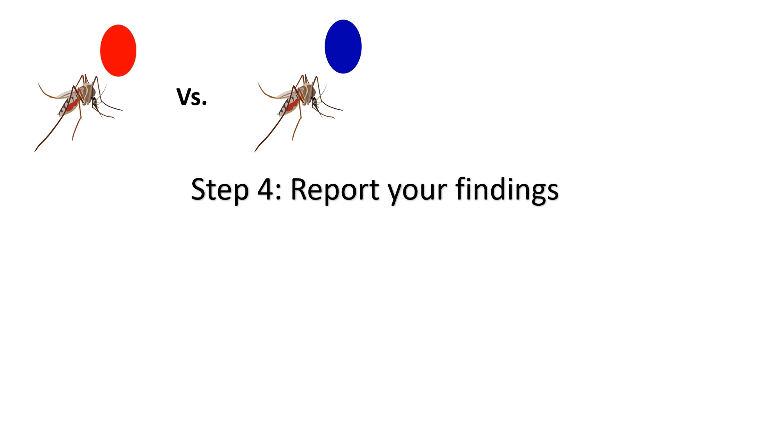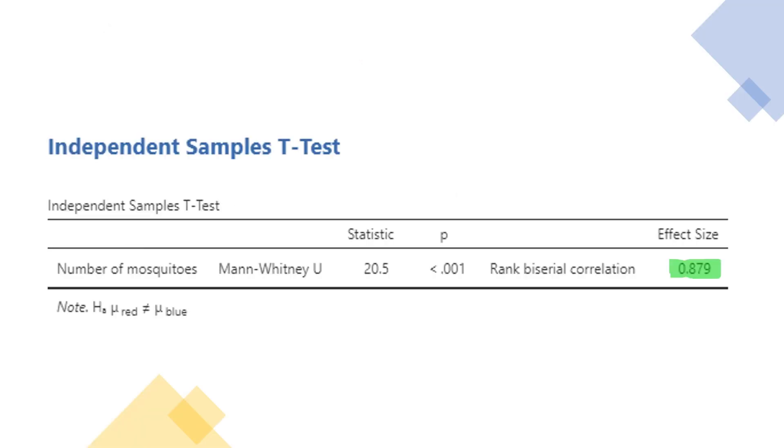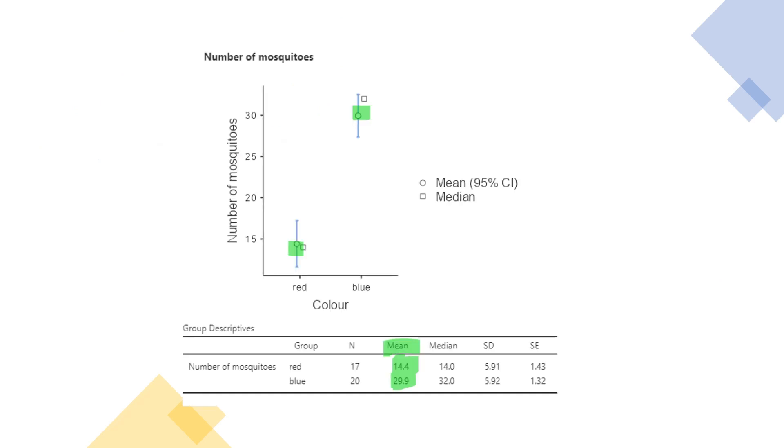Step four, report your results. We can see there is a significant difference between the colors red and blue and how many mosquitoes they attract. But let's find out which color did better and what the effect was. We can see that we have a very strong effect size and based on the plot and the table, we can see more mosquitoes come to the color blue rather than red. We see this both in the plot and by checking the means in the table.